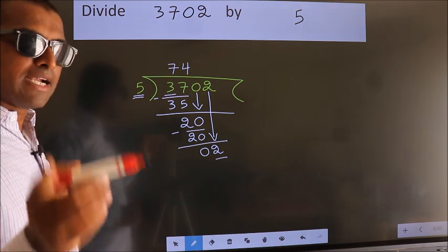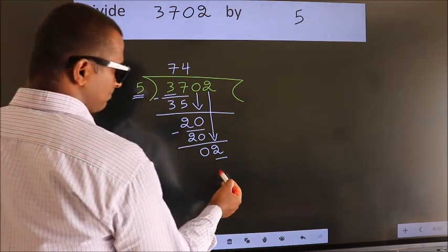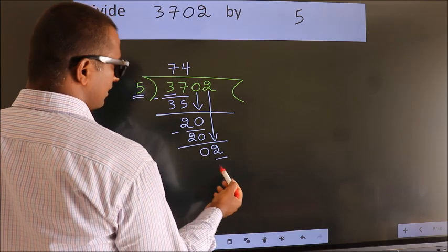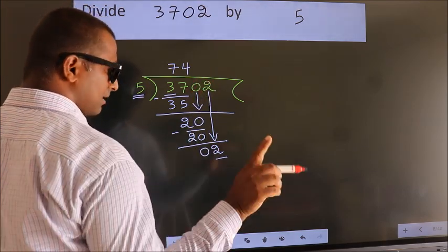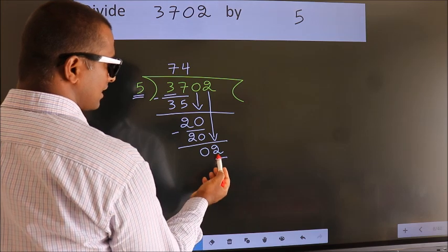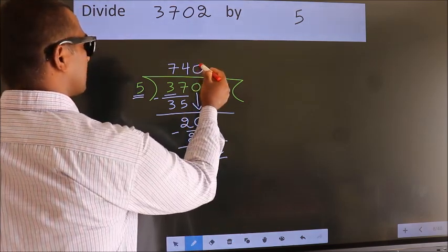Instead of that, what we should think of doing is which number should we take here? If I write 1, we get 5. But 5 is larger than 2. So what we do is we take 0 here.